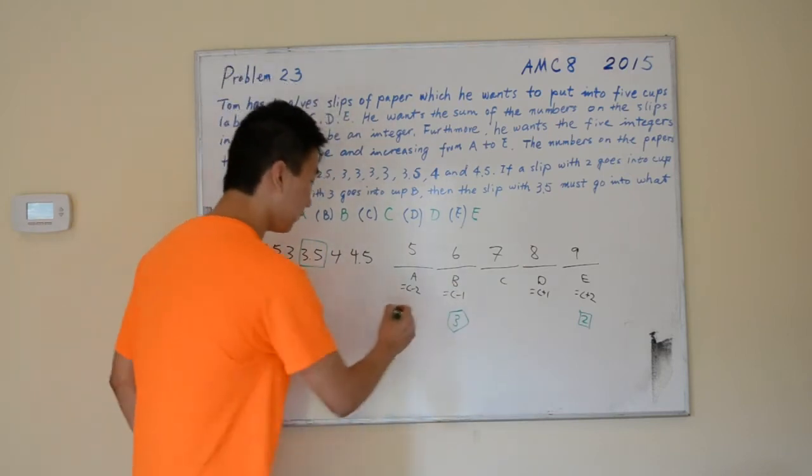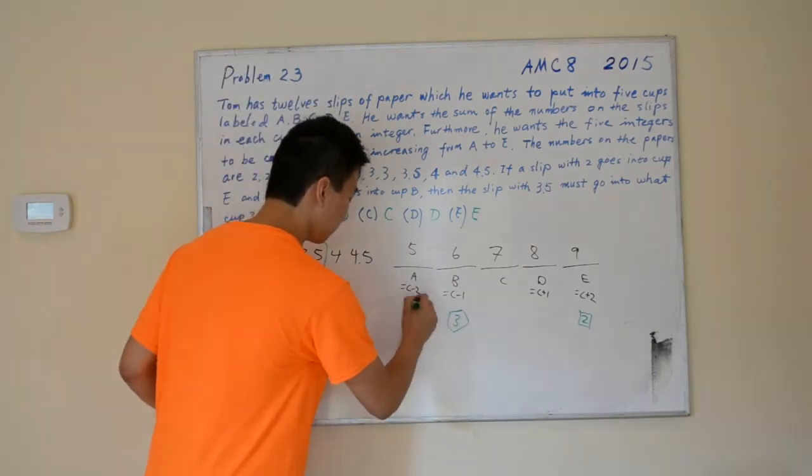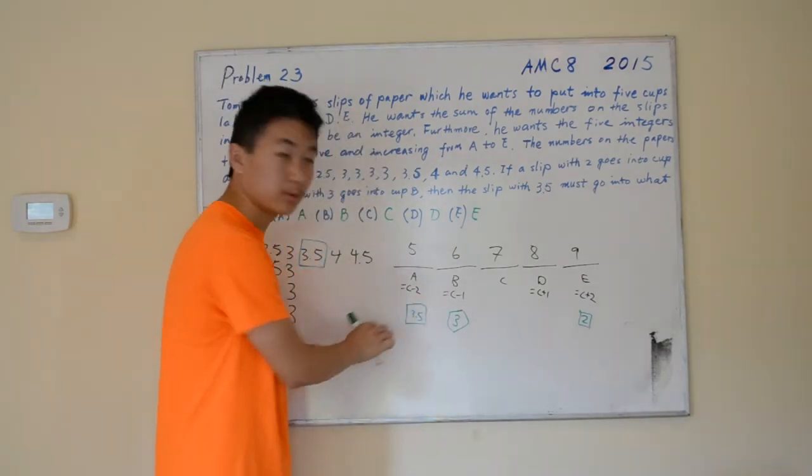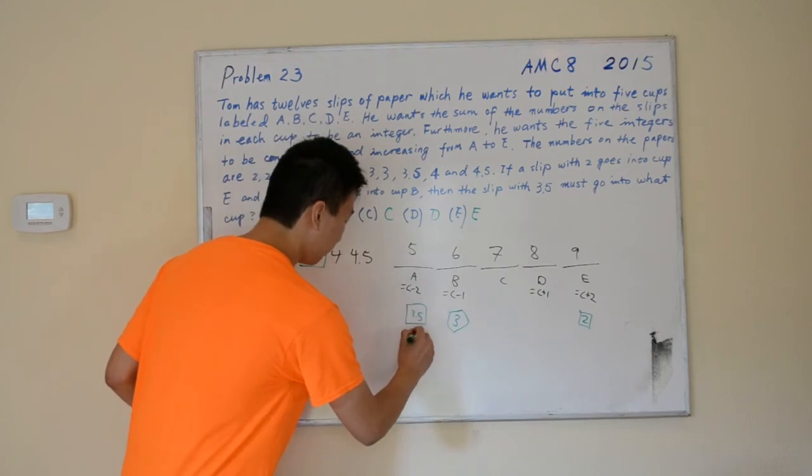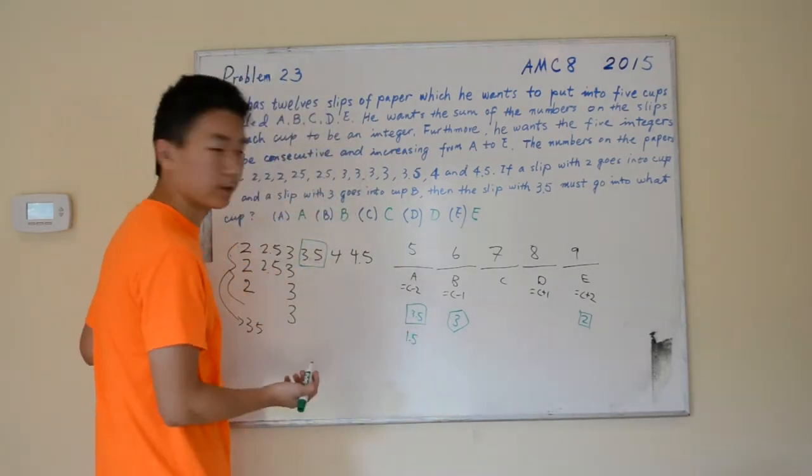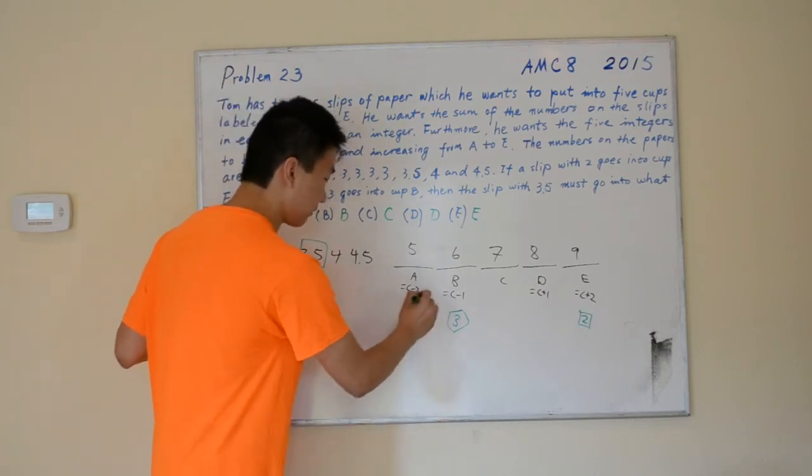If we put it into A, 5 minus 3.5 leaves us 1.5 to work with. None of these numbers can create 1.5, so this is not possible.